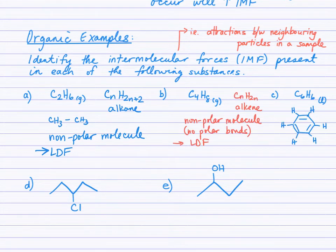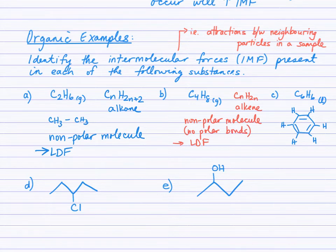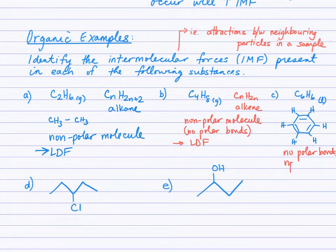In part B, the formula CₙH₂ₙ identifies an alkene. Regardless of where the double bond is placed, the molecule still has only carbon-carbon and carbon-hydrogen bonds, so it is a nonpolar molecule. The only IMF experienced is London dispersion forces. The same applies to benzene — all carbon-carbon and carbon-hydrogen bonds, nonpolar, therefore London dispersion forces only.